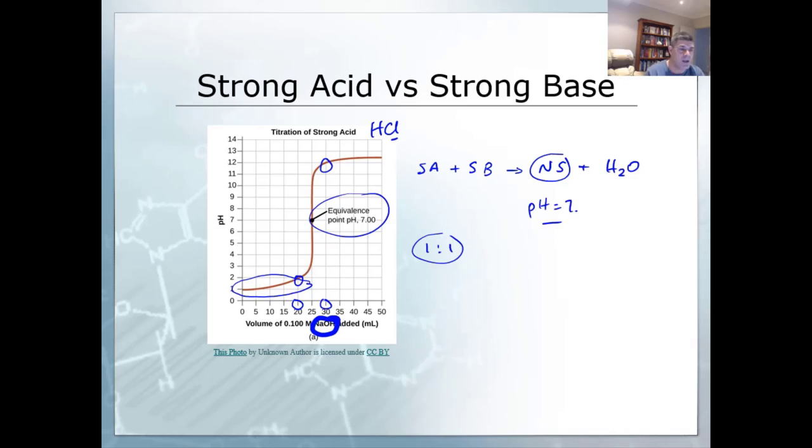That's a massive rise. Trying to figure out exactly what the point where the solution reached a pH of 7 is virtually impossible. So what we want to do is instead find what we call an end point.